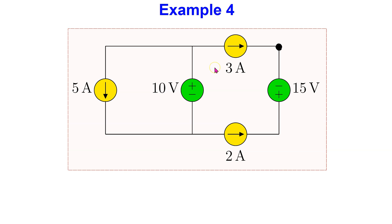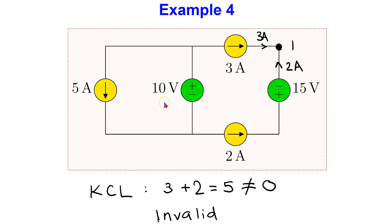Consider this fourth example, which is an interconnection of five ideal sources. Rather than exhaustively checking all loops and nodes in this circuit, we can use our knowledge and intuition from previous examples to make our tasks easier. The three amp current source, the 15 volt voltage source, and the two amp current source are connected in series. If we apply Kirchhoff's current law to node one, we can see that KCL is being violated. Thus, this is an invalid interconnection.